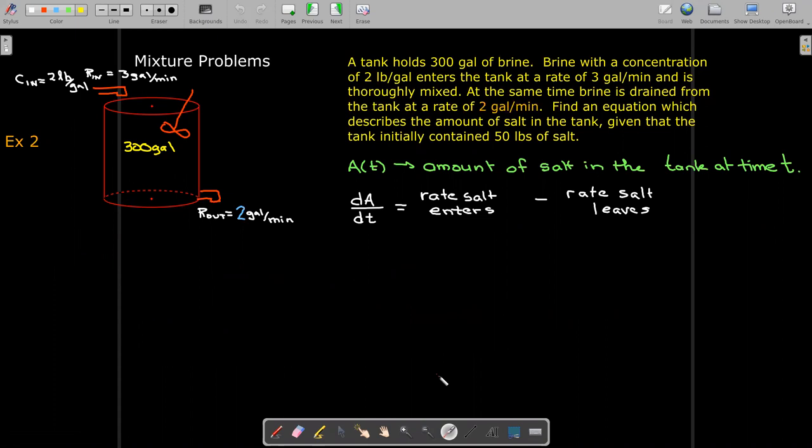So in the second example, we're going to change the problem slightly. We're going to assume the tank is very large, much, much larger than 300 gallons. And we're only going to extract or pump out the brine at 2 gallons per minute. So we're still pumping in brine at 3 gallons per minute. But we're only pumping it out at 2 gallons per minute. So the tank, the volume of brine in the tank is increasing. The tank is filling up. So how does that change our differential equation?